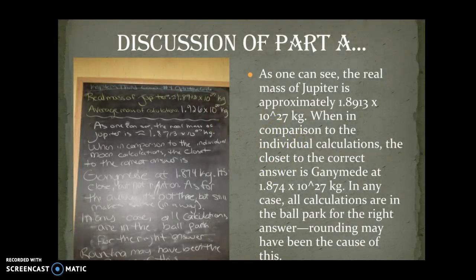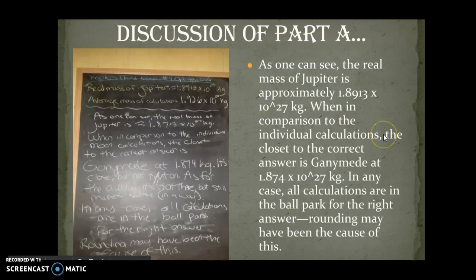This is the discussion of part A. The real mass of Jupiter is approximately 1.8913 times 10 to the 27th kilograms. In comparison to the original calculations, it's pretty close to all of them but especially Ganymede, which is 1.874 times 10 to the 27th kilograms. They're all really close generally speaking. I also found the average mass of the calculations which is 1.926 times 10 to the 27th kilograms. So again really close, mostly because of rounding. They actually don't, like the real mass of Jupiter - this is a roundabout way.